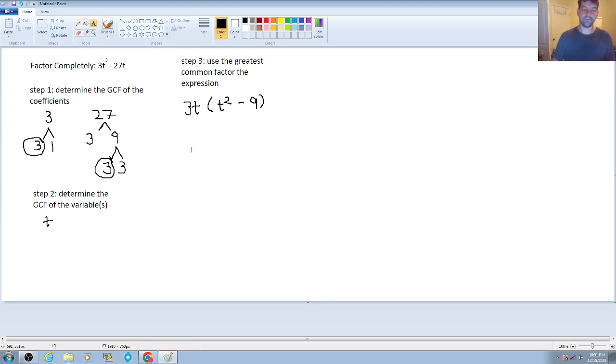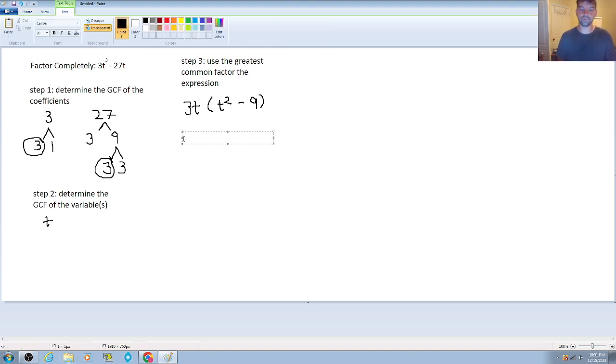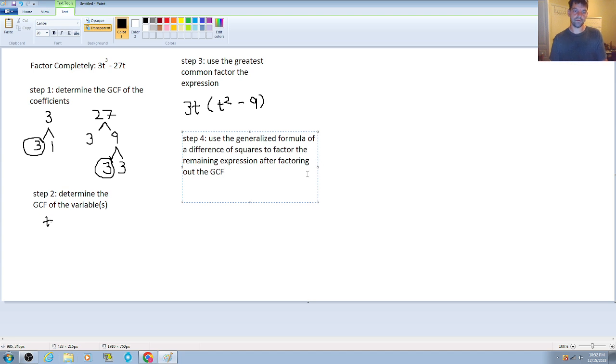So what makes t squared minus 9 a very unique expression is that it's a difference of squares binomial. So it has a very unique and special type of factoring. So remember that with a difference of squares, we have that generalized formula. So step four is going to be use the generalized formula of a difference of squares to factor the remaining expression after factoring out the greatest common factor.